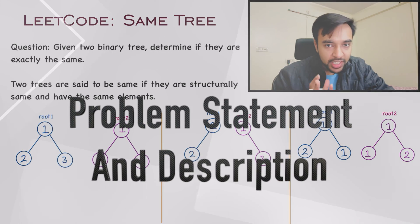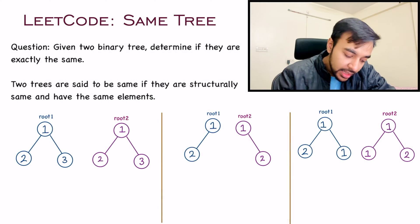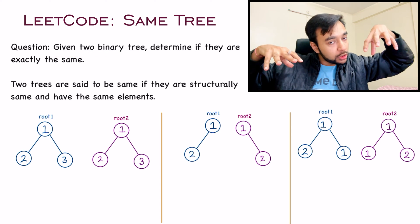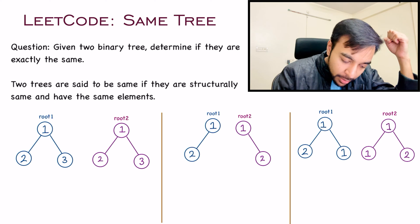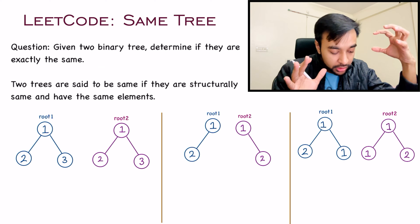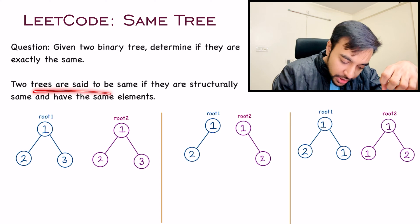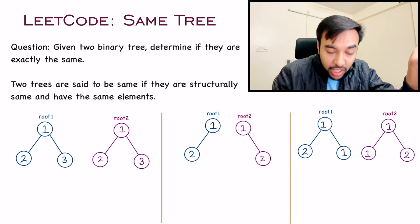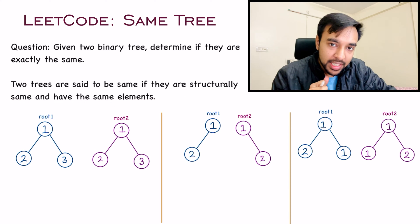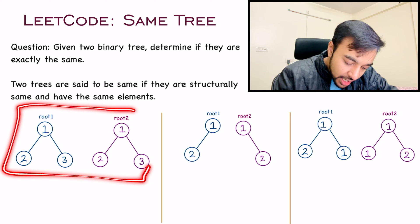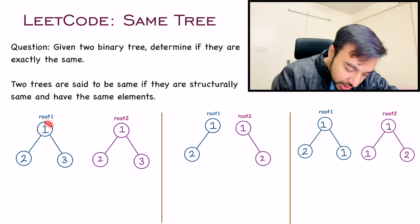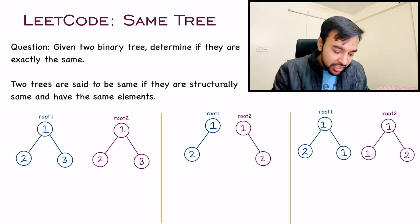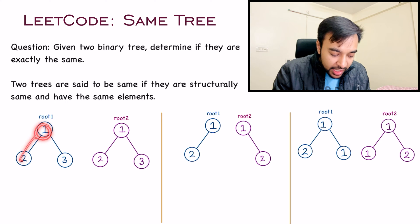First let's make sure that we understand the problem statement accurately. In this problem, you are given two binary trees — that means you will be given the roots of two different binary trees and you have to determine if they are exactly the same. Two trees are said to be same if they are structurally the same and they have the same elements as well. In our first test case, you can see that we have two trees and both of these trees have the same elements: one, two, and three. They have the same structure as well — a root and then a left and then a right.